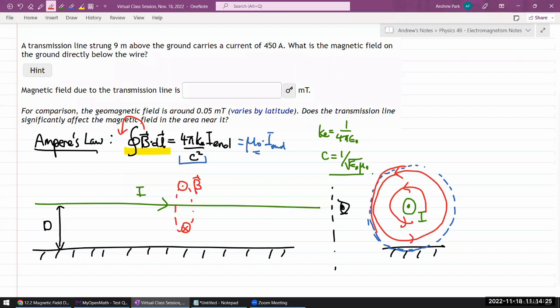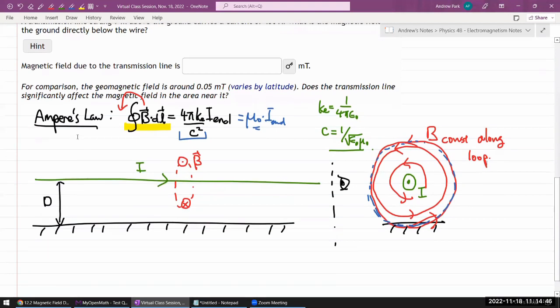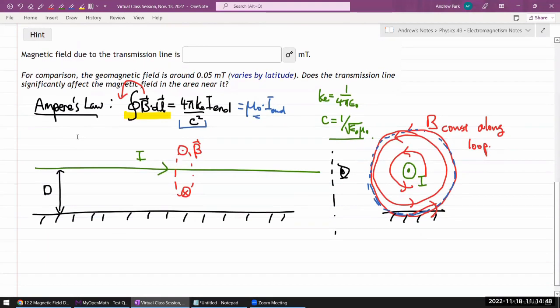From Biot-Savart's law, we have a sense that the strength of the magnetic field depends on the distance. When we imagine magnetic field along this Amperian loop, this is one thing we can say from symmetry, that magnetic field is constant along the Amperian loop. With all of this in mind, I think we are now ready to apply Ampere's law.